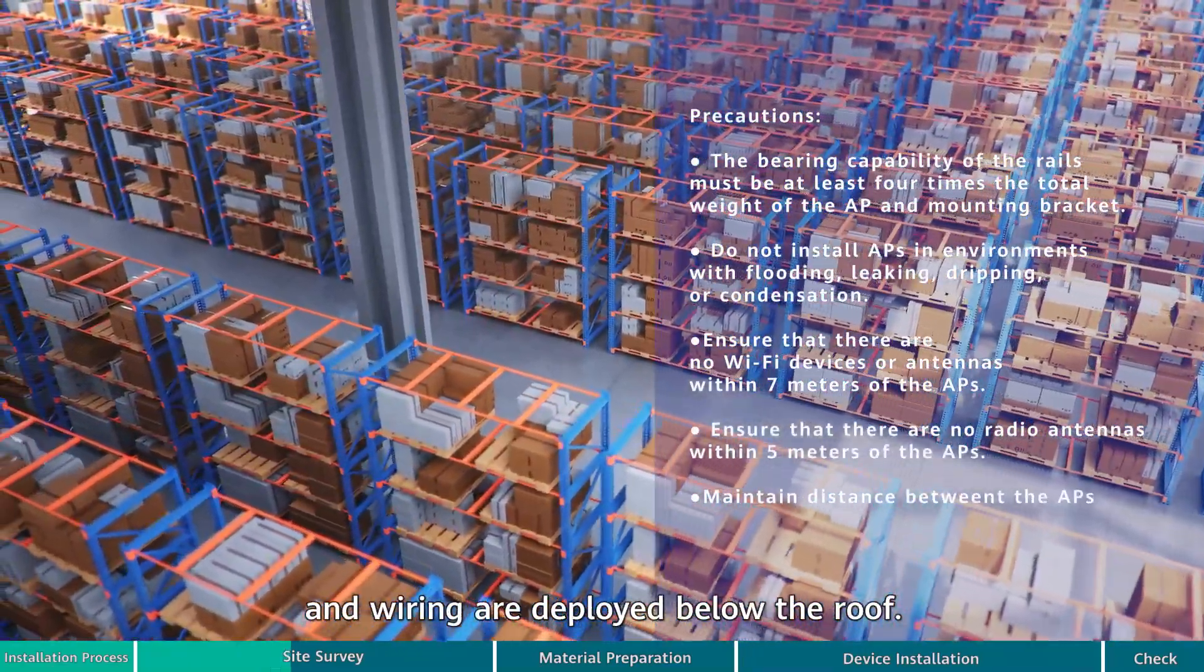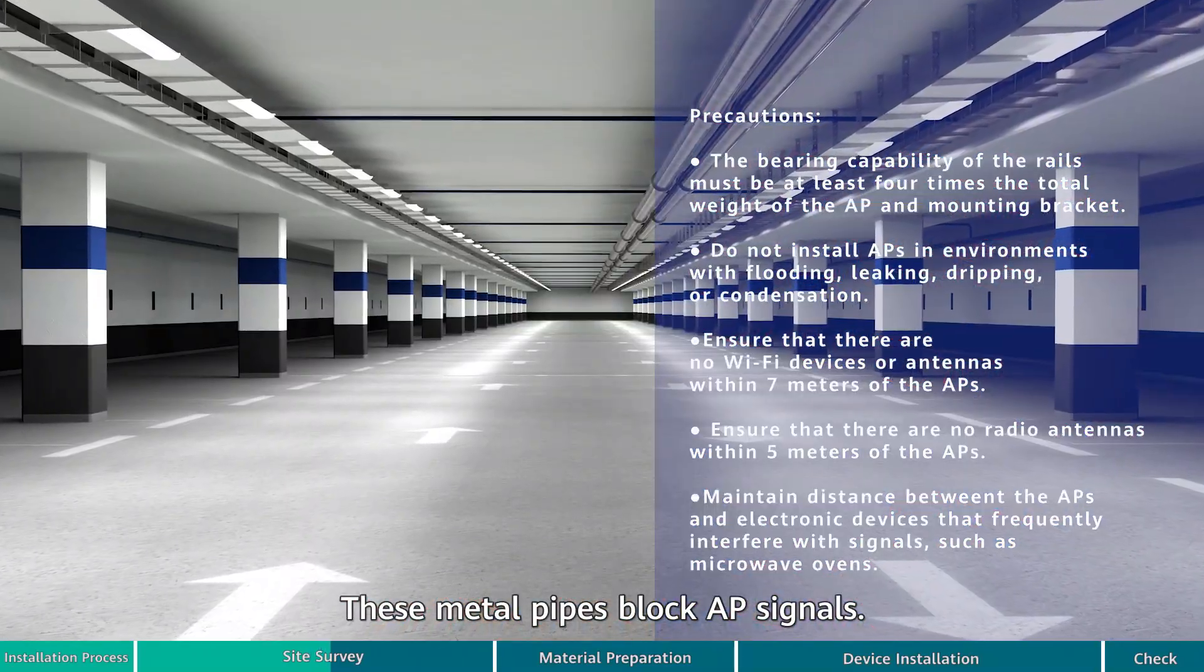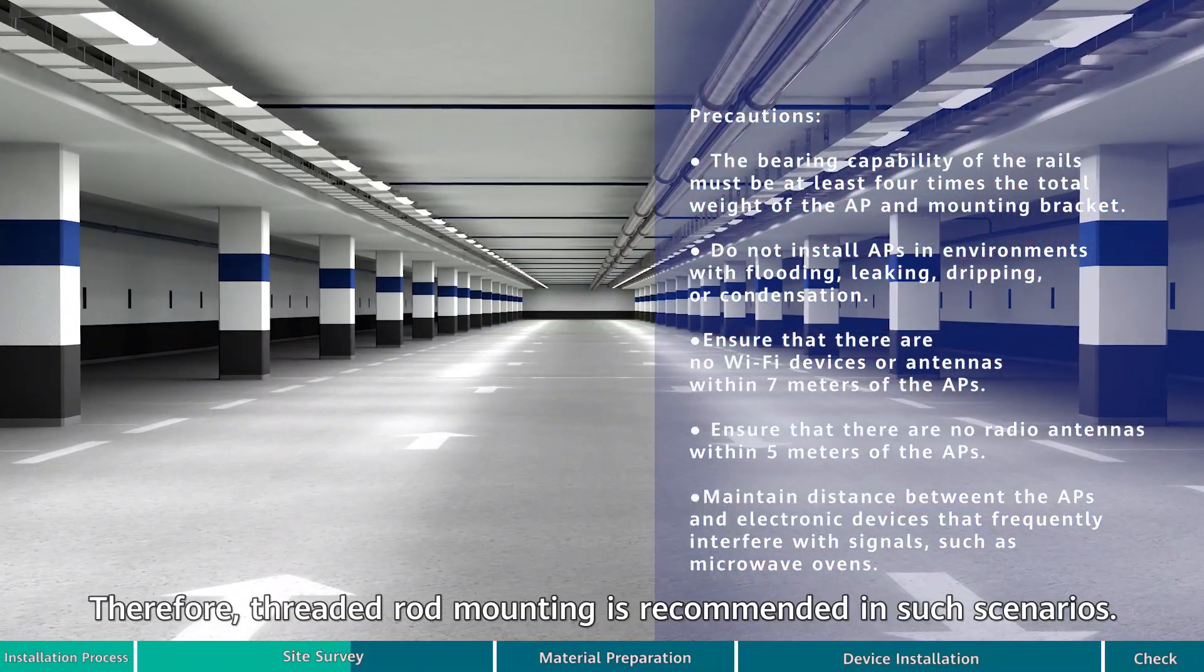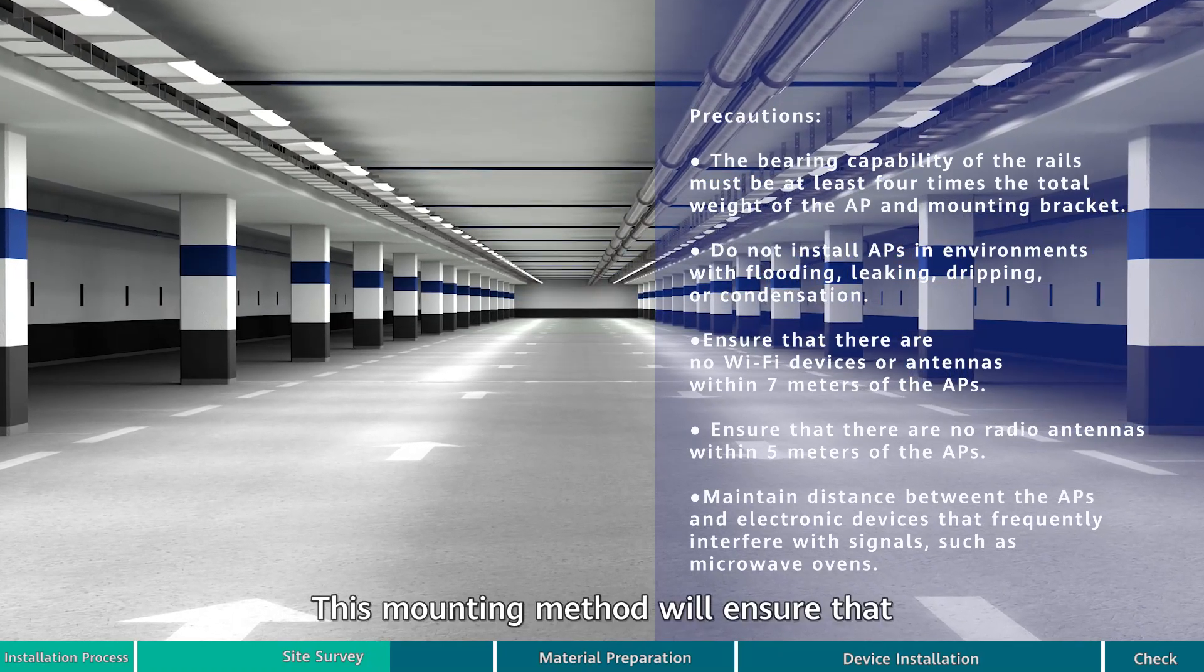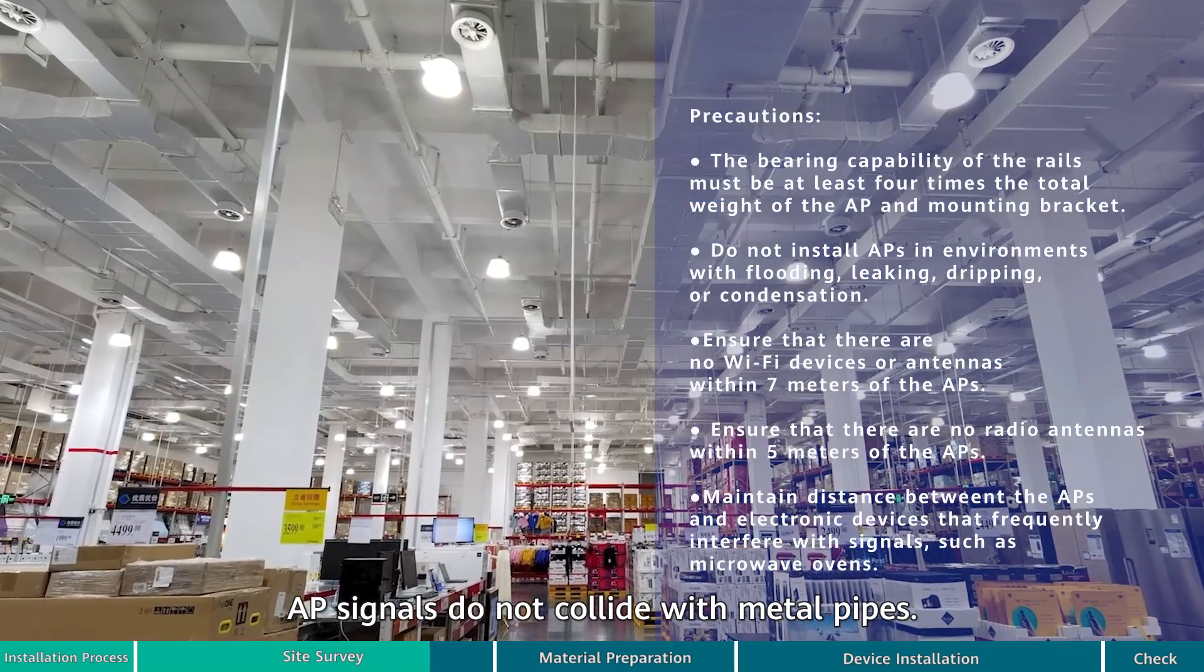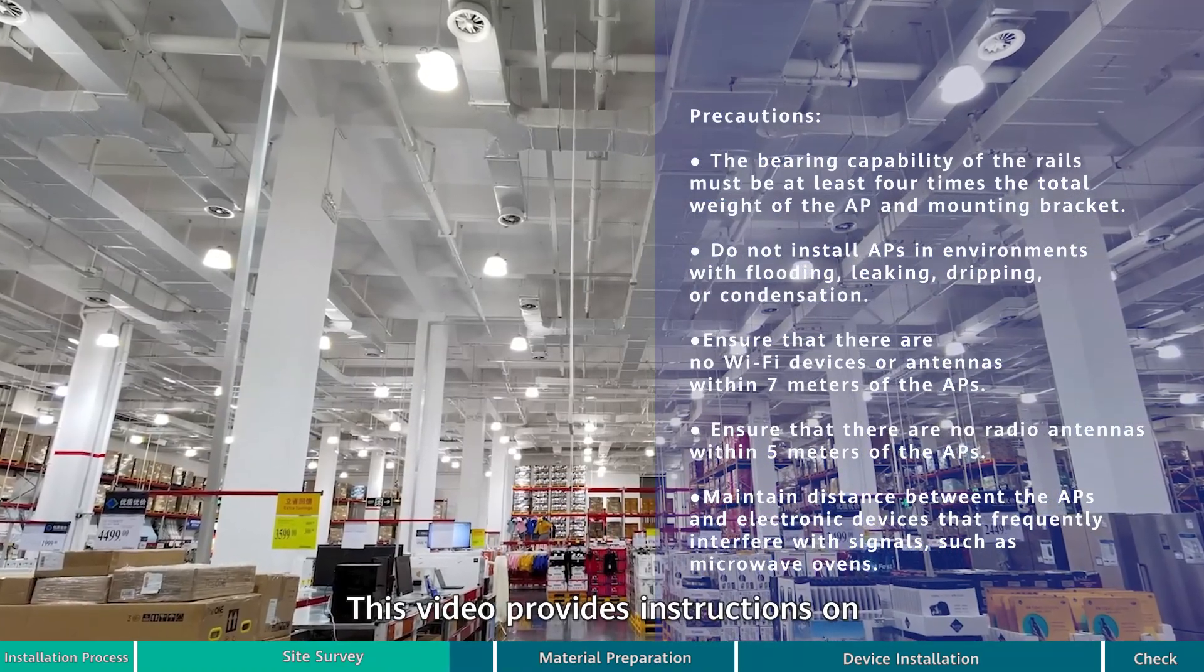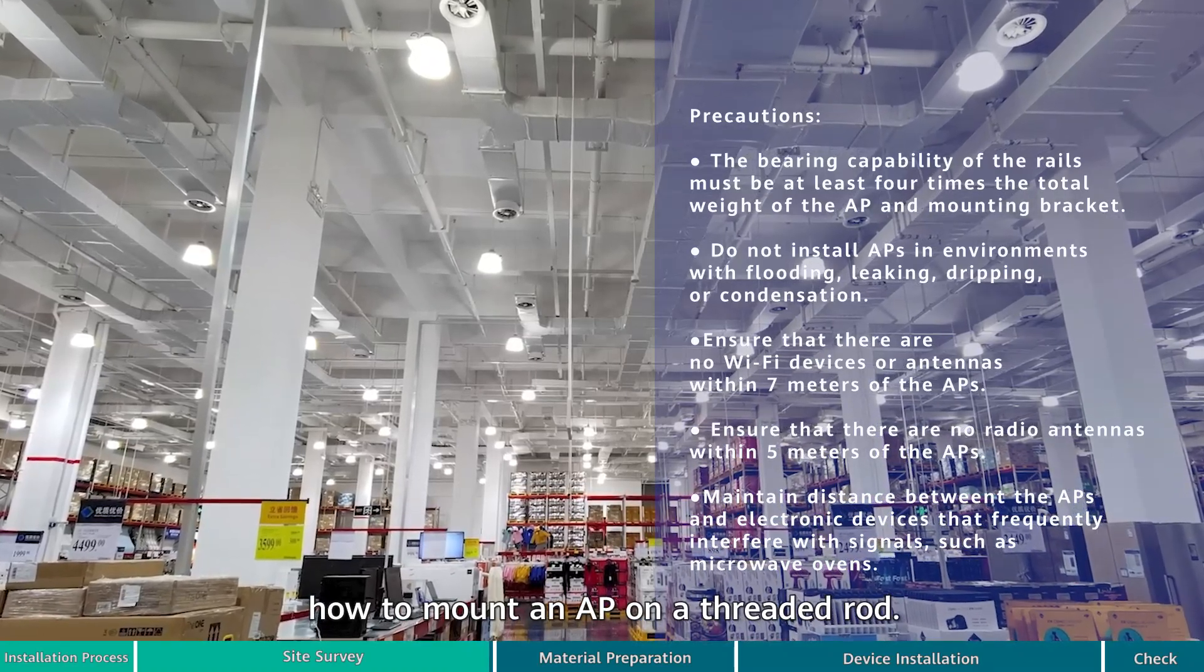These metal pipes block AP signals. Therefore, threaded rod mounting is recommended in such scenarios. This mounting method ensures that AP signals do not collide with metal pipes. This video provides instructions on how to mount an AP on a threaded rod.